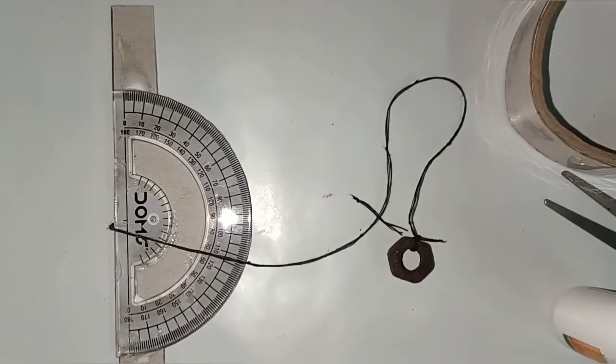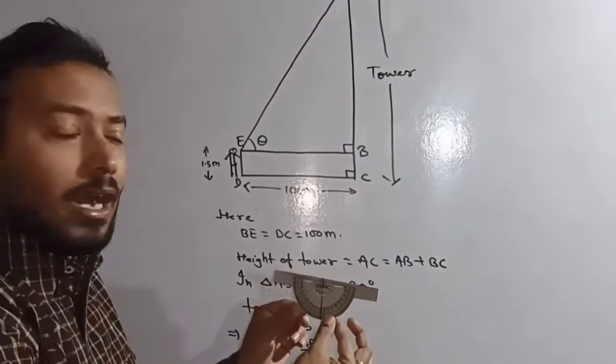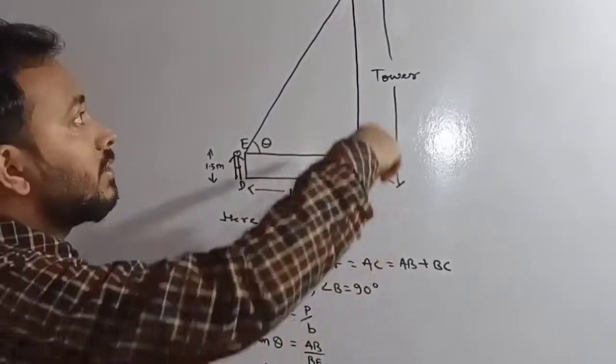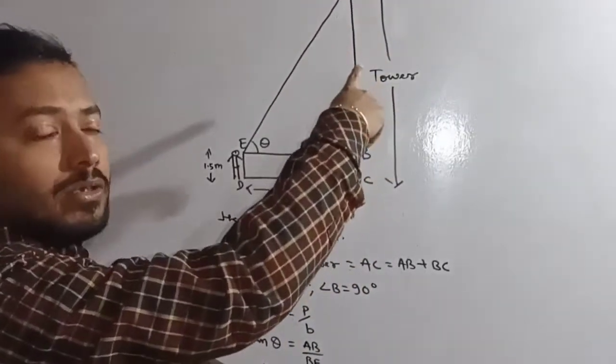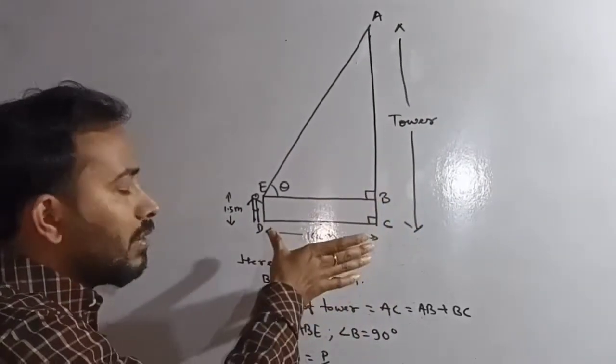So we're going to use it now. Students, we're going to see the application of this clinometer, how to find the angle. For example, if we want to find the height of a tower, it's very difficult to find the height directly. So to get that, if you know the horizontal distance...